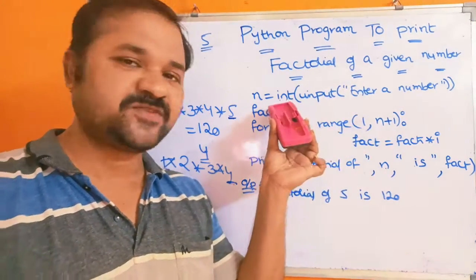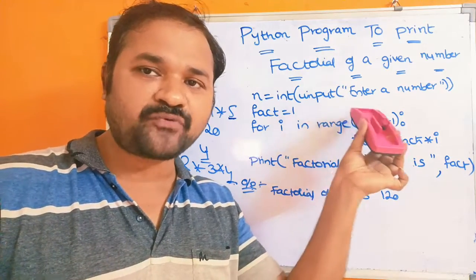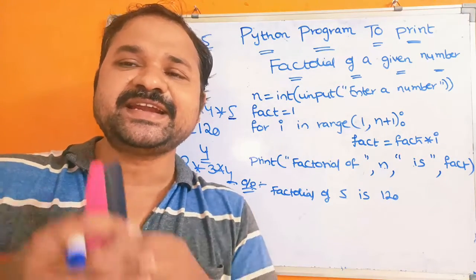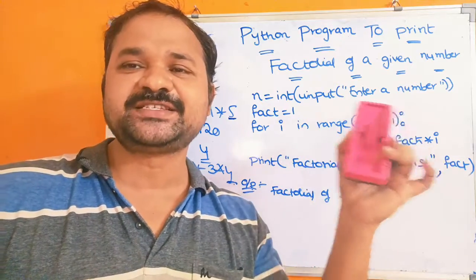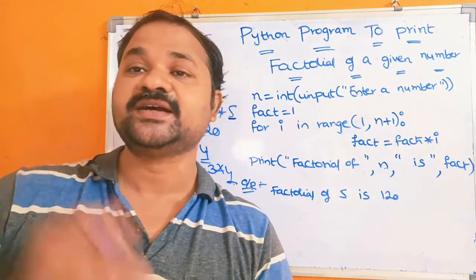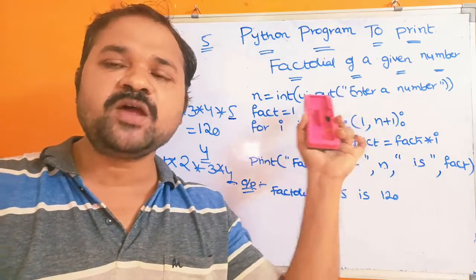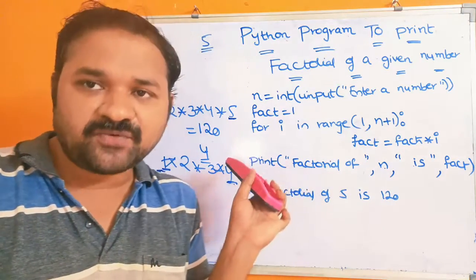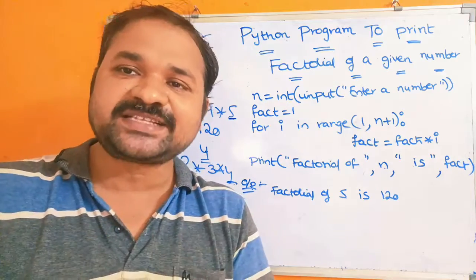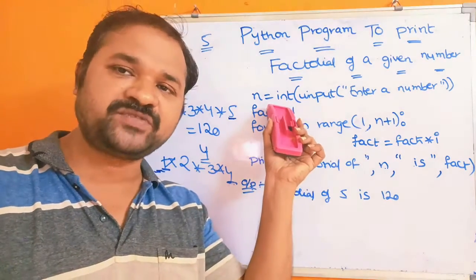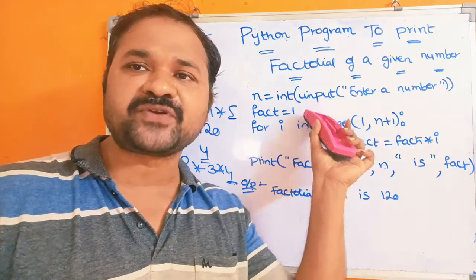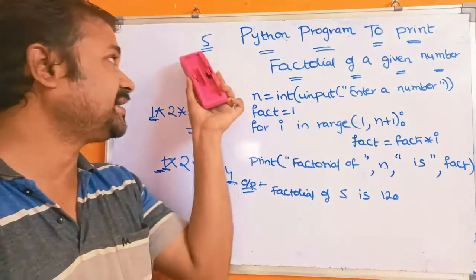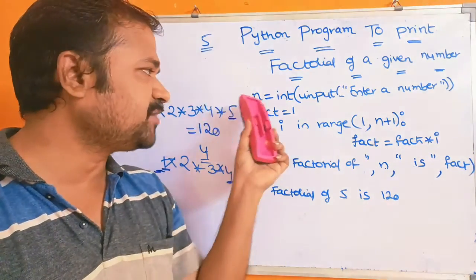Now let's see the program. The first statement is: n = int(input("Enter a number")). Here, by using the input function, we can read data from the keyboard. The input function is similar to scanf in C, but the problem is that input returns data as a string. Since we want to perform arithmetic, we convert it to integer using the int function. So now the number 5 is stored in n.